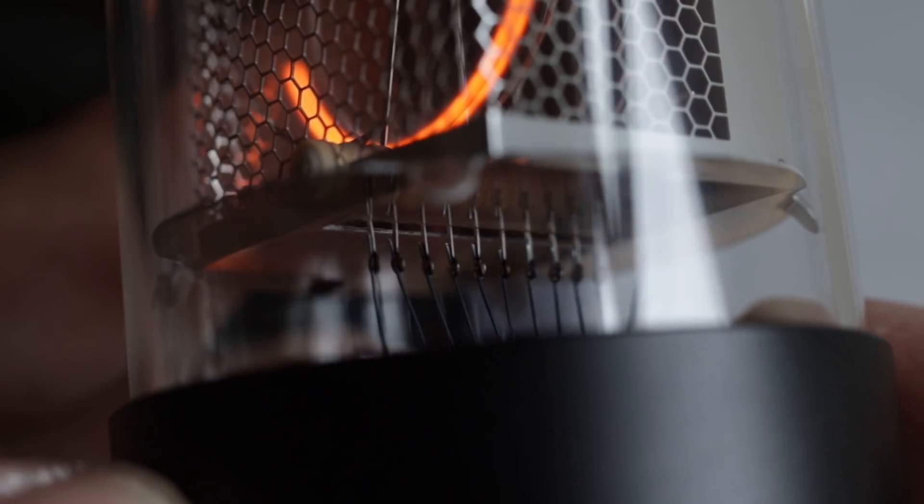In our current Nixie tube you can see that we don't use any coating on the wires. This is because the electrical field is weakened by the mica plate under the anode cage. So the electrical field here is simply not enough to make the wires glow. All the glow is concentrated inside the Nixie tube.